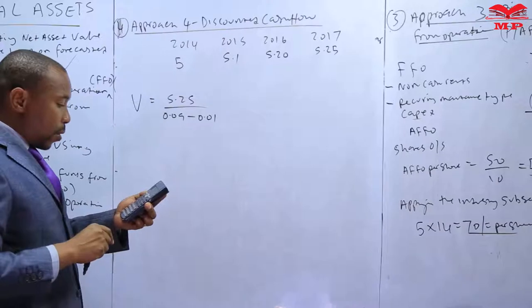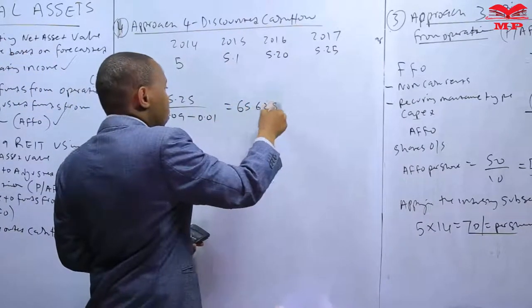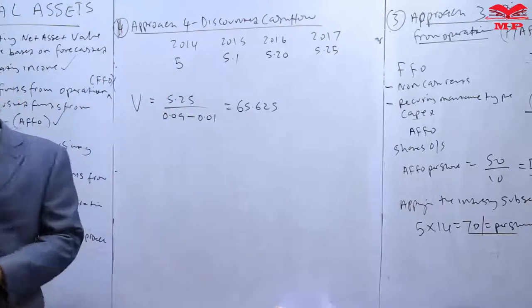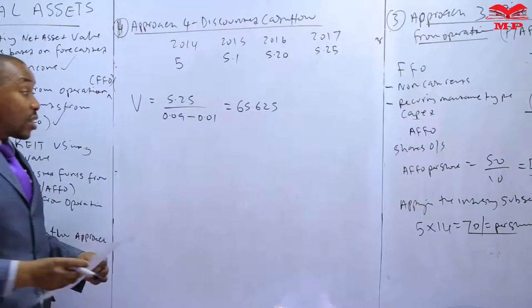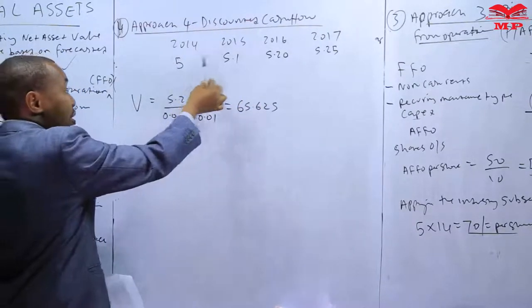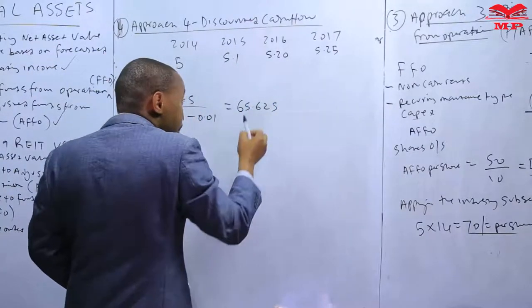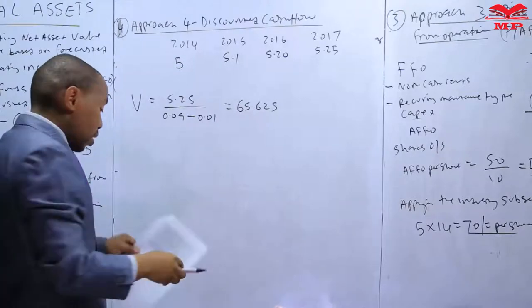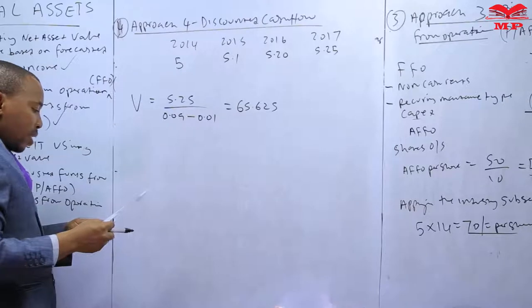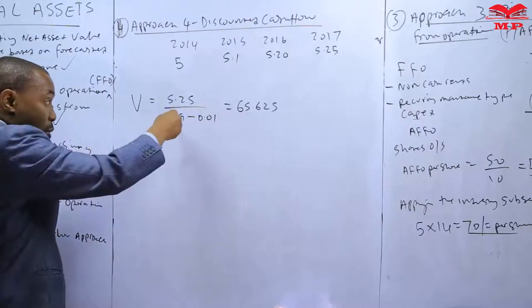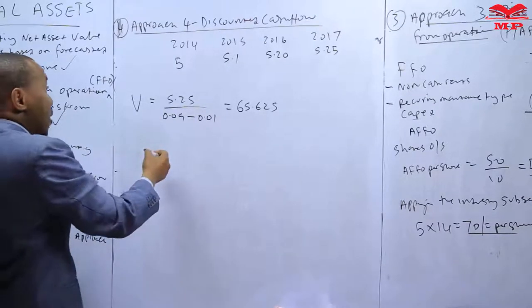We have 5.25 divided by, open the brackets, 0.09 minus 0.01, which equals 65.625. Once you get that, we now need to discount it back. Like I have already explained, we now discount this based on the applicable growth rate. With the growth rate, the present value will be discounted against the required return component, 1 plus R. That's what we are going to discount it.